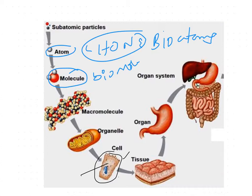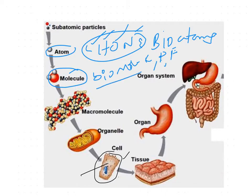Biomolecules are nothing but carbohydrates, proteins, and fatty acids. If you see the structure of these carbohydrates, proteins, and fatty acids, all these biomolecules are made up of bioatoms only — carbon, hydrogen, oxygen, nitrogen, sulfur. These biomolecules combine to form macromolecules. Macromolecules are the combination of carbohydrates, proteins, and fatty acids. Such macromolecules combine to form cell organelles.